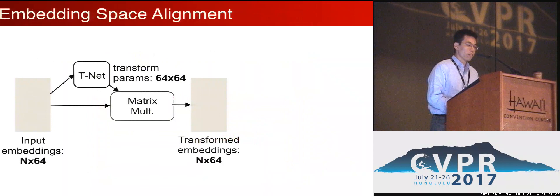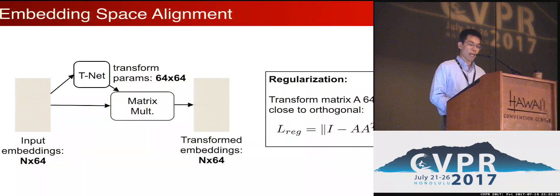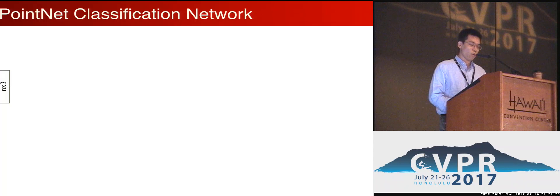Similarly, we can use such transformer networks to align points in embedding space. For example, the figure shows a transformation for intermediate embeddings in a 64-dimensional space. To avoid falling into bad local minima, we add a regularization loss to constrain the transformation matrices to be close to orthogonal.